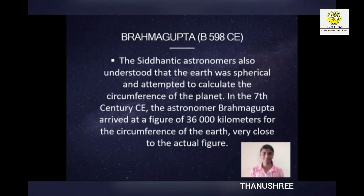Brahmagupta: The Siddhantic astronomers also understood that the Earth was spherical and attempted to calculate the circumference of the planet. In the 7th century CE, the astronomer Brahmagupta arrived at a figure of 36,000 km for the circumference of the Earth — very close to the actual figure.